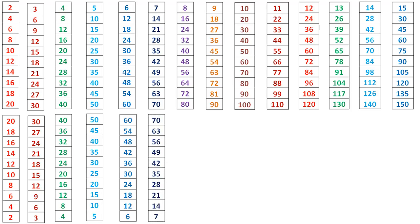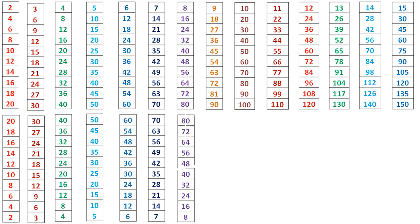7 times 10 is 70, 7 times 9 is 63, 7 times 8 is 56, 7 times 7 is 49, 7 times 6 is 42, 7 times 5 is 35, 7 times 4 is 28, 7 times 3 is 21, 7 times 2 is 14, 7 times 1 is 7.